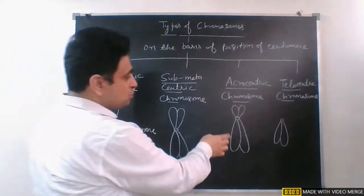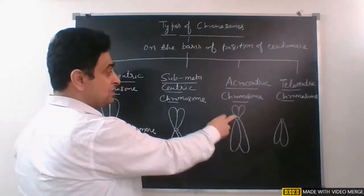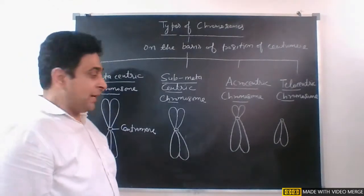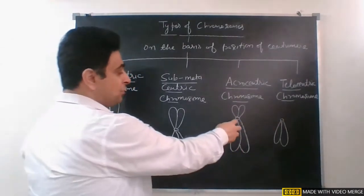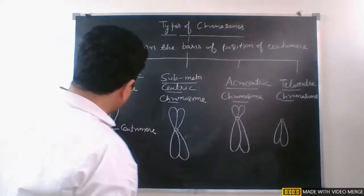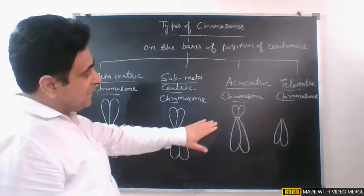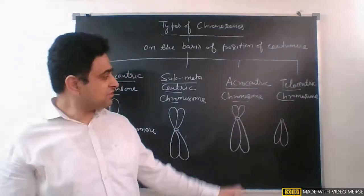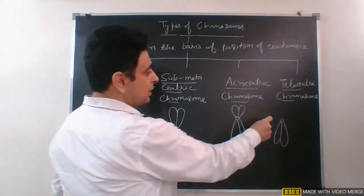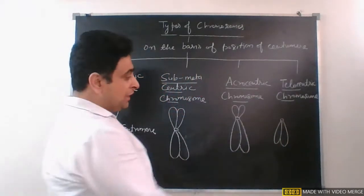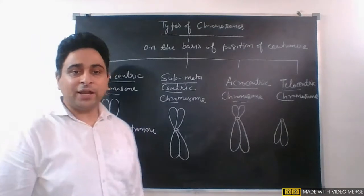In the case of acrocentric chromosomes, the centromere is quite far away from the center position, making the length of the arms on both sides unequal. In telocentric chromosomes, the centromere is present exactly at one end of the chromosome, and arms are present only on one side. When the centromere is at one end and arms exist on only one side, such chromosomes are called telocentric chromosomes.